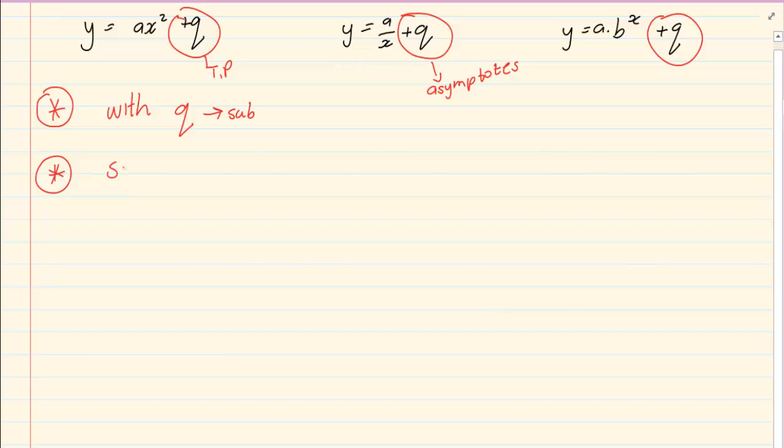After we substitute q, we're going to substitute any random point. And our aim is to solve for a. Once you solve for a, you simply substitute and you got your equation. What are we going to substitute? We only substitute a and q.